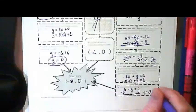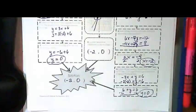And we can see again that we got negative 2 comma 0 solving it all three ways.